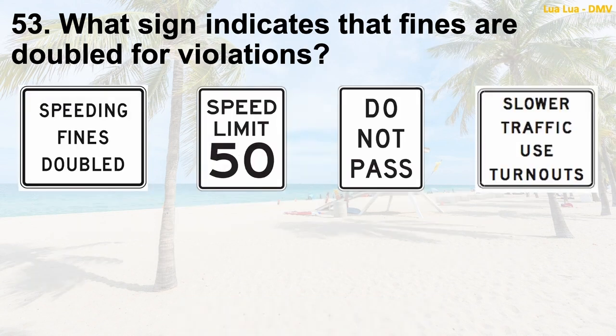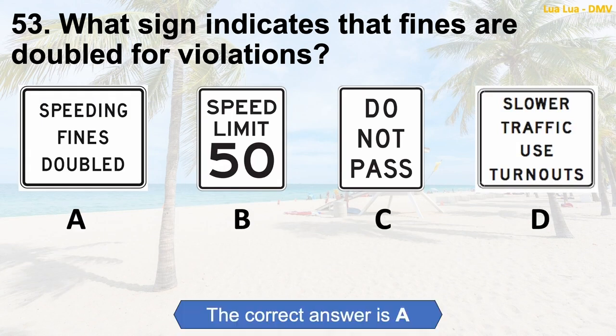Question 53: What sign indicates that fines are doubled for violations? The correct answer is A: Speeding fines doubled — posted in active school and work zones. Fines will be doubled if you are cited for speeding in this area.